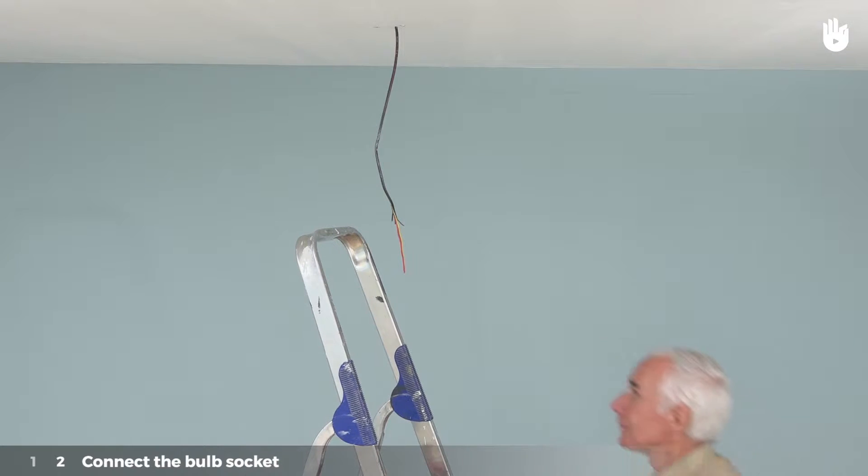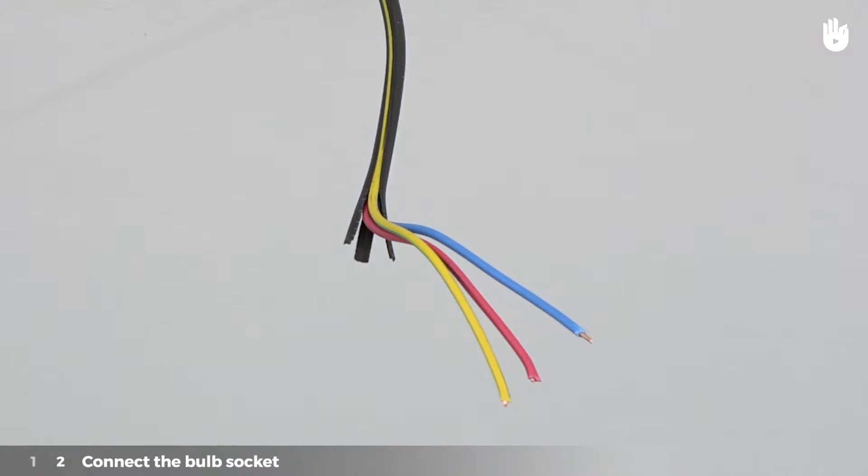At the location provided for the lamp, you will find three electrical wires: two power supply wires and a green and yellow ground wire.